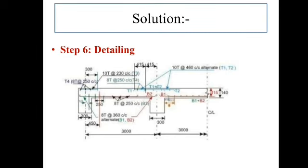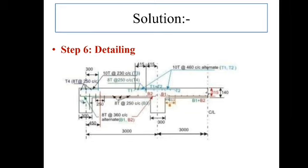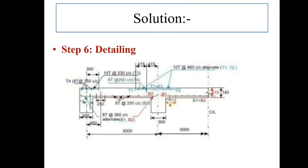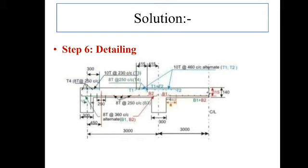Distribution reinforcement for both top and bottom is 8 mm dia at 250 mm center to center. Bottom main reinforcement is 8 mm dia at 180 mm center to center. The values 250 mm, 300 mm, and 415 mm shown represent curtailment and overlap distances. IS code specifies that top and bottom bar overlap and curtailment should be provided at 0.15 times L at the continuous end and L/7 at the support. The 450 mm value represents 0.15 times the 3000 mm clear span.